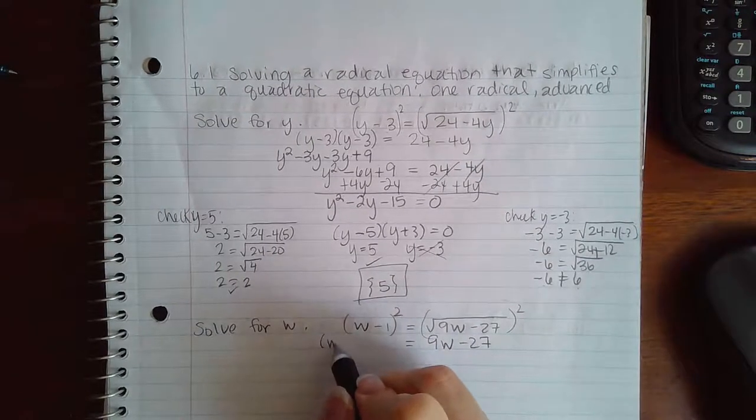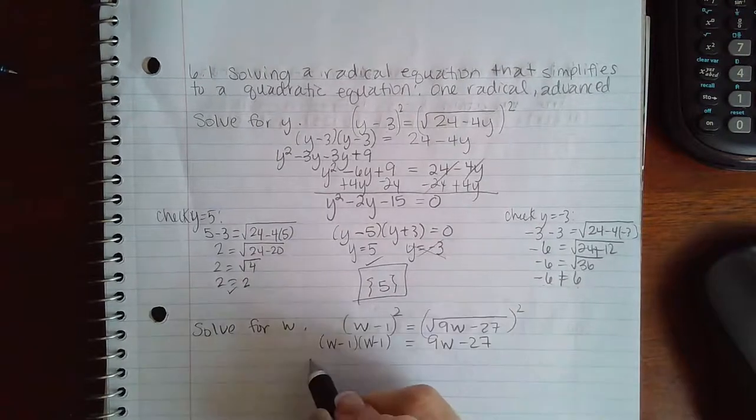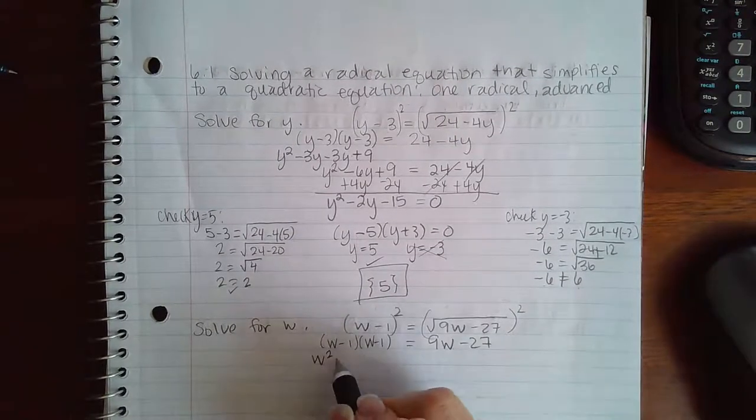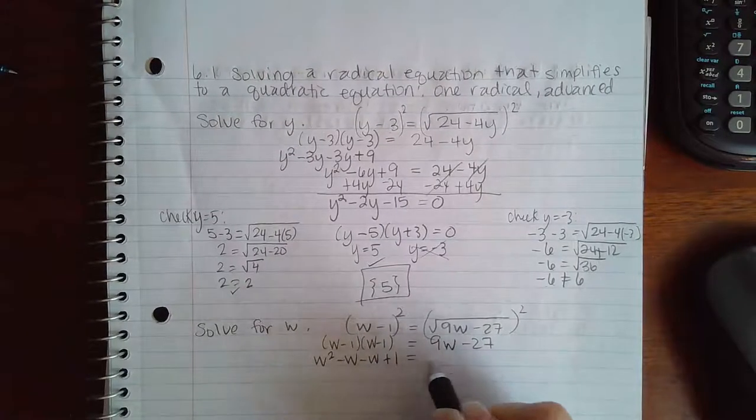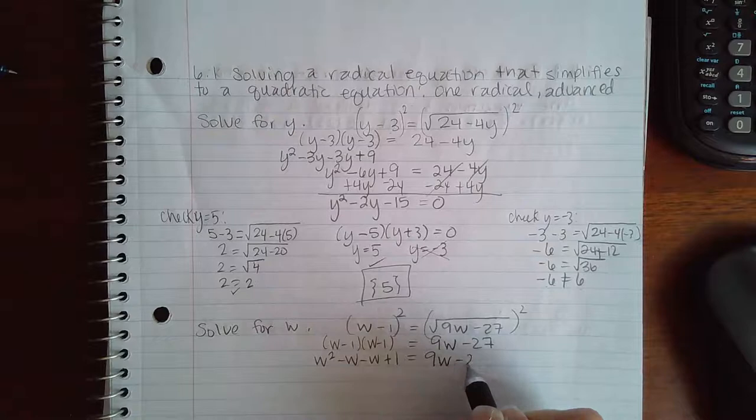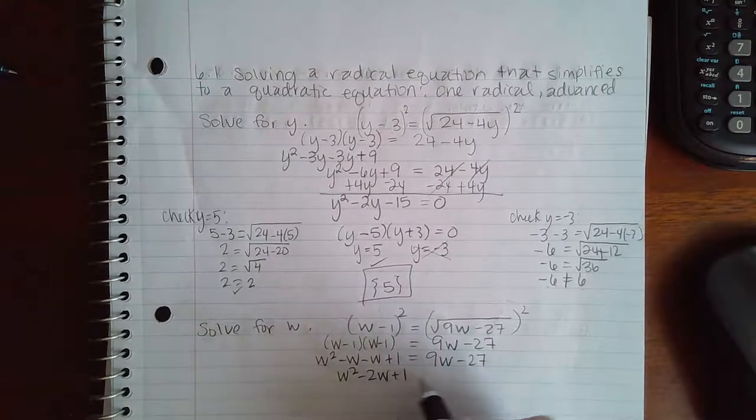On the left-hand side, I do need to FOIL out this binomial times itself. So w squared minus w minus w minus w plus 1. Combine my like terms, w squared minus 2w plus 1.